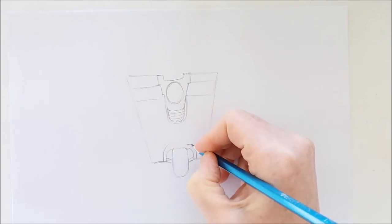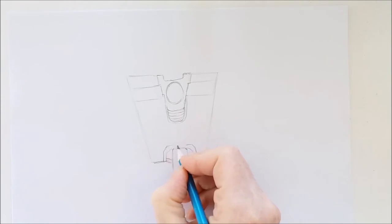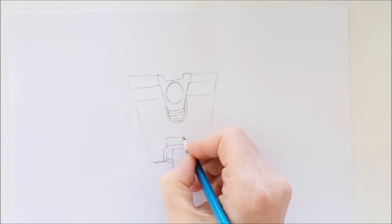Right down here, I'm just going to add a little bit of detail. I'm outlining this opening for the wheel, and then I'm just going to draw a little rectangle up here and put a little oval inside of it.